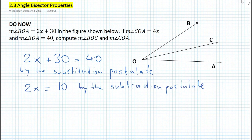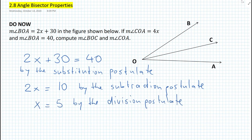Then we know that 2x is equal to 10 by the subtraction postulate — we're subtracting equal quantities, which is 30, from equal quantities, giving us 2x equals 10. Therefore, x is equal to 5 by the division postulate.